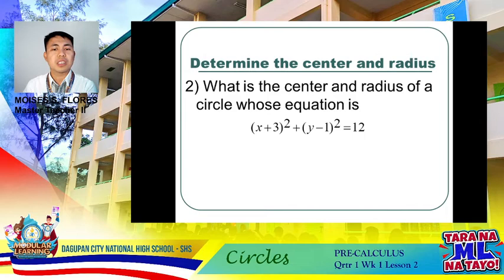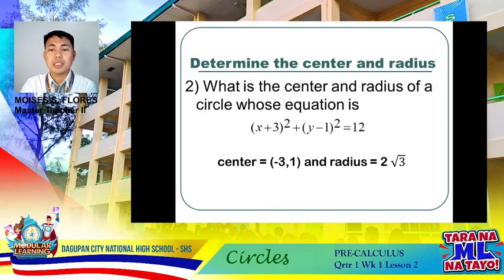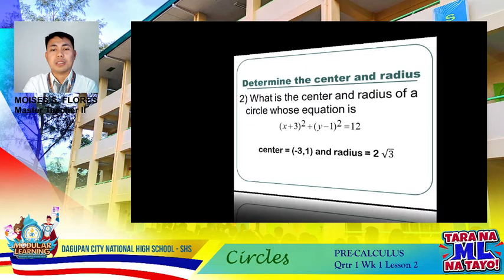Let's try another one. Find the center and radius of a circle whose equation is (x + 3)² + (y − 1)² = 12. The center is (−3, 1). The radius is √12, which simplifies to 2√3. It's just a matter of extracting the square root of 12.